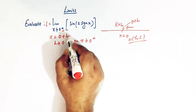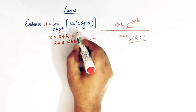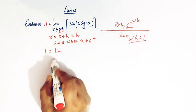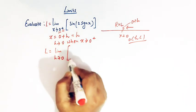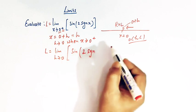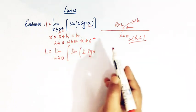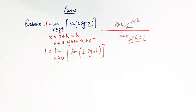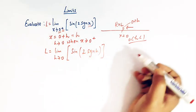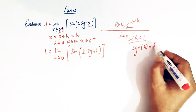So let us call this limit as L. We'll take x = 0 plus h, where h tends to 0 when x tends to 0 positive. Now let us express this limit in terms of h. We are taking x = 0 plus h, which is simply equal to h. So we have L = limit as h tends to 0, and we have greatest integer of sine of 2 times signum of h.